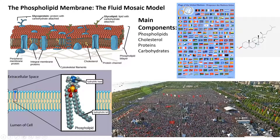Believe it or not, phospholipids are very similar to what olive oil is made out of. The widely accepted way of describing the structure of the phospholipid membrane is called the fluid mosaic model.